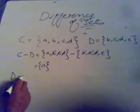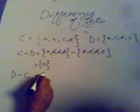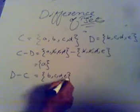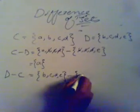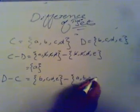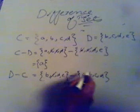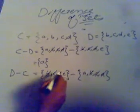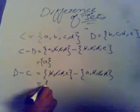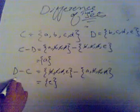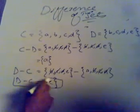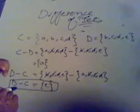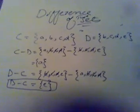Now I will calculate D minus C. D minus C: first write the value of D: B, C, D, E, then the difference sign, then the value of C: A, B, C, D. I cancel the same symbols: C with C, B with B, D with D. What is left in the first set is E, so D minus C equals {E}. These were the basic operations performed on sets. This is the end of this lecture, and we will discuss further in future lectures, inshallah.